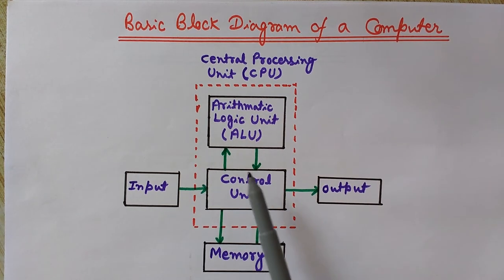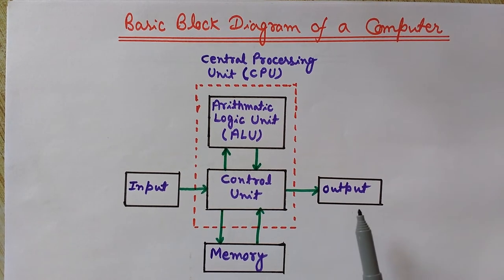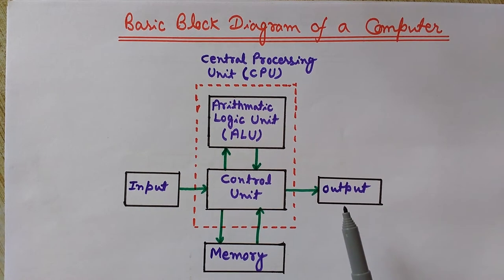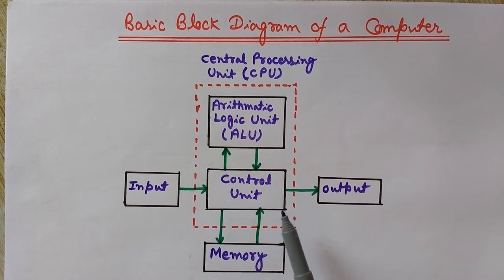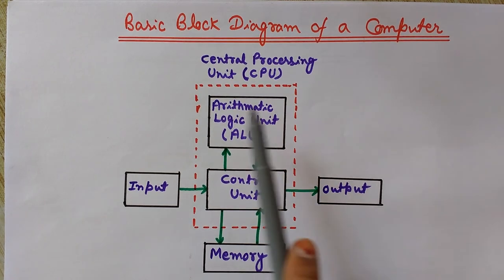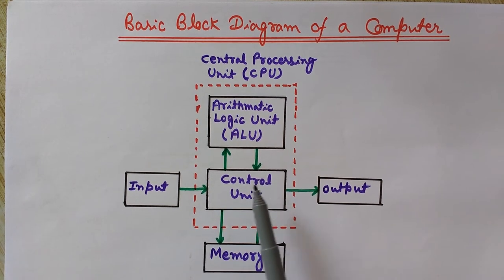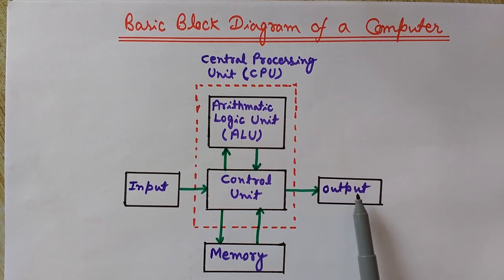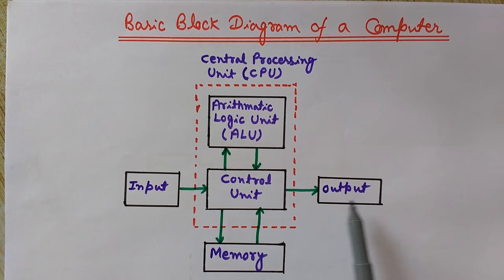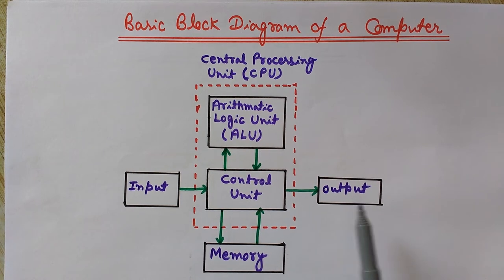Output devices — examples are printers and the Visual Display Unit, the VDU. The purpose of output devices is to show the output, or the results of the processing, to the user. They convert the data so that it can be easily understood or seen by the user, helping in connecting the outside world with the results of the computer.